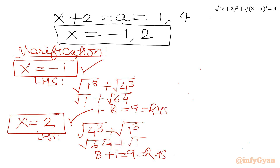So our final real solutions for this radical equation are x = −1 and x = 2. This brings the end of the video friends. Do not forget to like, share and subscribe. Bye-bye, take care of yourself.